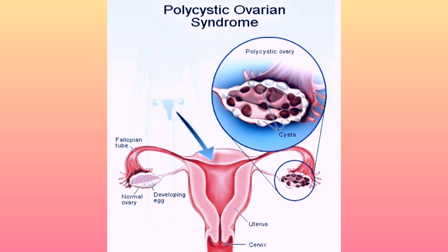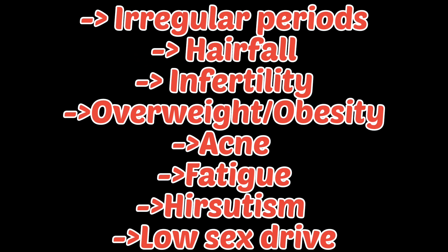Now, the symptoms of polycystic ovarian syndrome or polycystic ovarian disease include: irregular periods, hair fall, infertility, overweight or obesity, acne, fatigue, hirsutism, and low sex drive, among others.